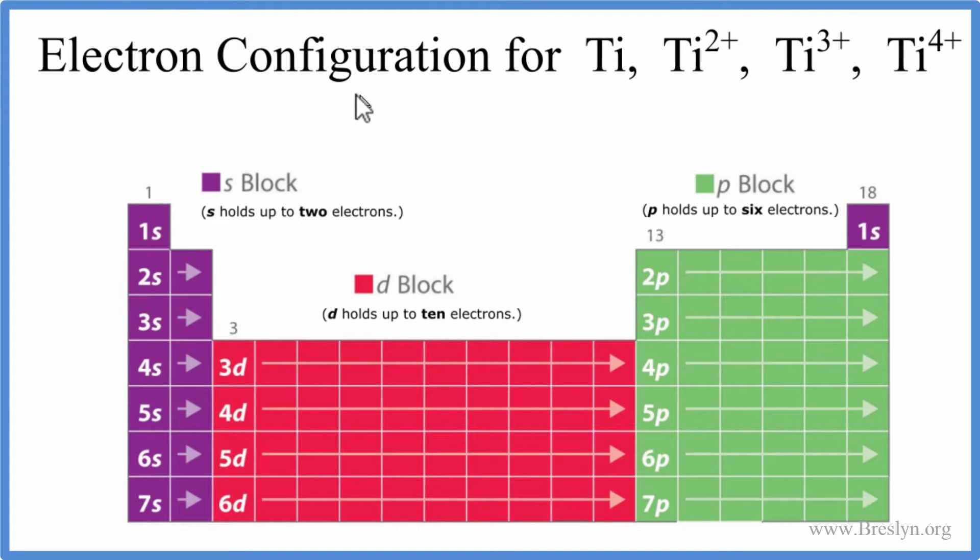In this video, we'll write the electron configurations for titanium and then its ions, Ti2+, Ti3+, and Ti4+. So we'll start by writing the electron configuration for titanium, and then we'll remove some electrons to give us these ions here.